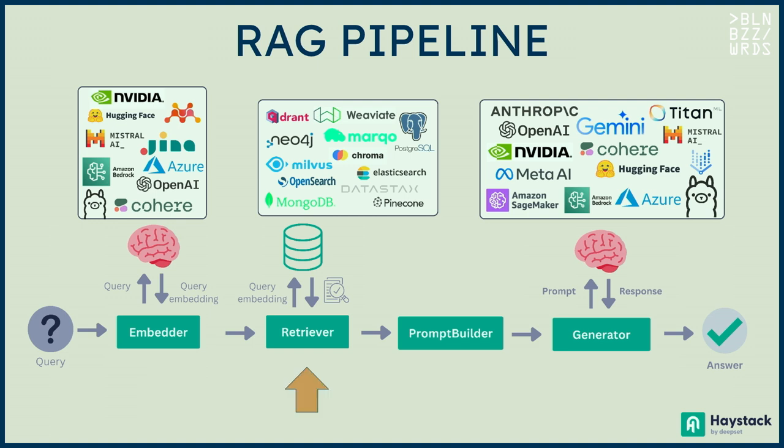Assuming I already have some indexed documents in my database, the retriever gets that query embedding and returns the top-k relevant documents from my database. As database options, I can use Quadrant, Weaviate, Neo4j, Elasticsearch, OpenSearch — basically most of the very famous databases out there.